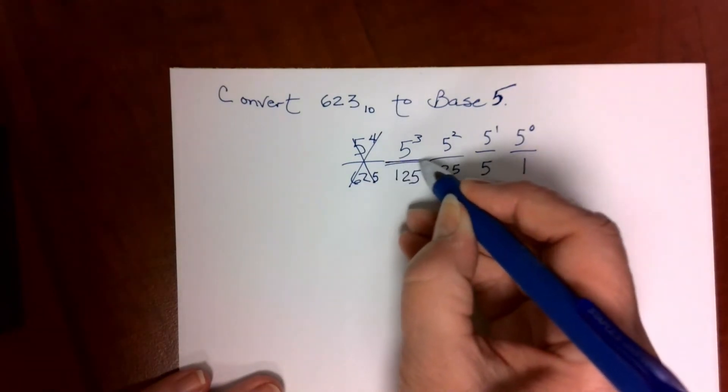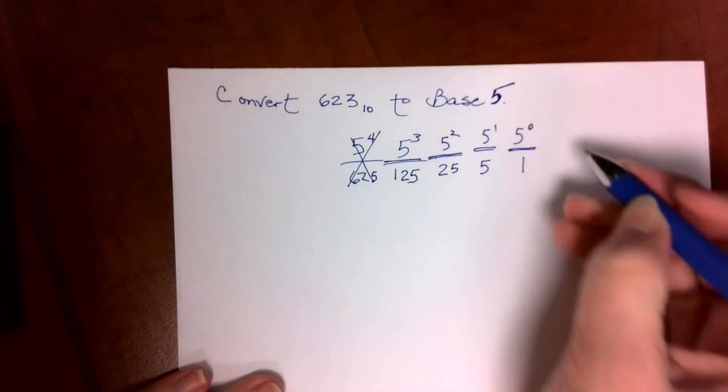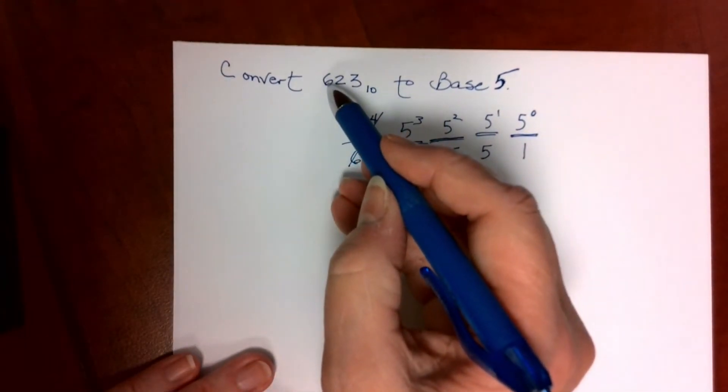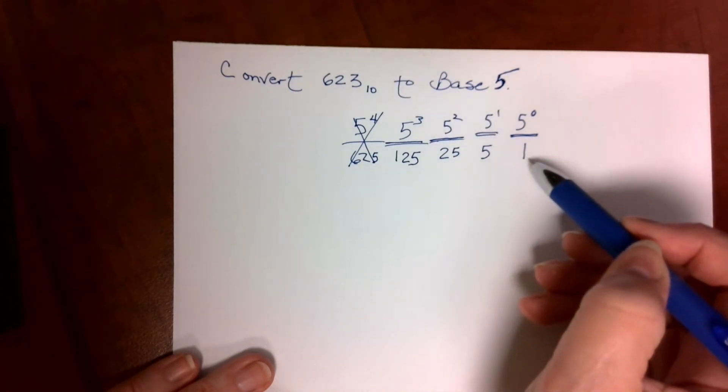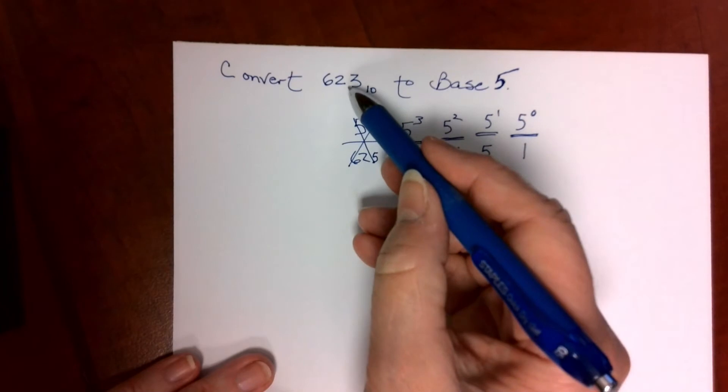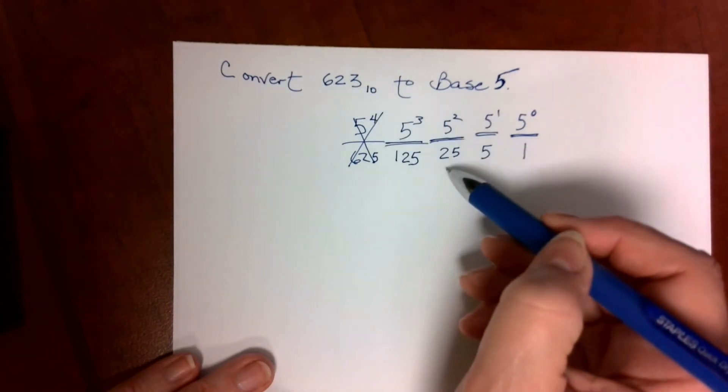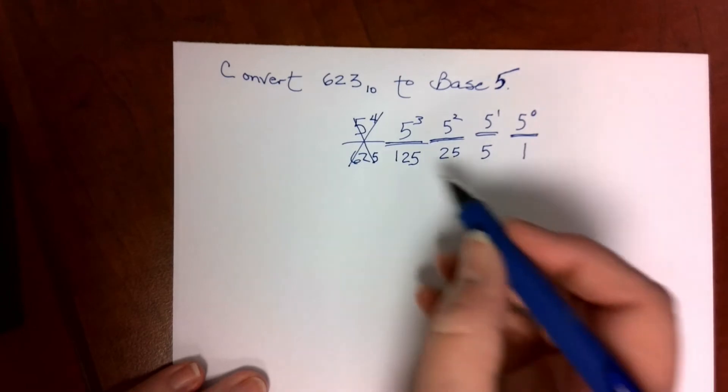So now that we know the value of every column, we can't simply plop these numbers 6, 2, 3 into the three columns because the columns are in base 5 and my numbers in base 10. We cannot just put 6, 2, 3 here. Here's what we ask ourselves.